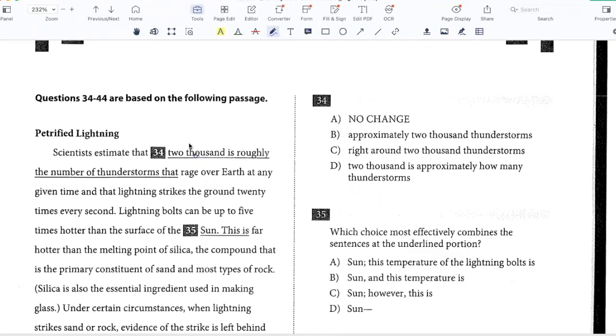Now this is a question on redundancy because what you are basically saying here is that scientists estimate that 2,000 thunderstorms rage over the earth at any given time. So you don't have to say it in this way, 2,000 is roughly the number that's just using too many words so it's not A. So approximately 2,000 thunderstorms rage over earth that's concise and does not use extra words so I like B. Right around 2,000 thunderstorms this is informal usage right so I prefer to say approximately and not write about 2,000 thunderstorms so C is not good and 2,000 is approximately how many thunderstorms is also redundant so B is correct.